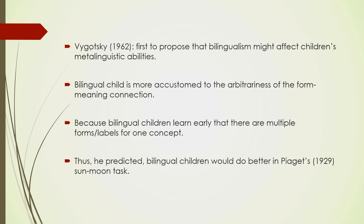This understanding goes back to Vygotsky in 1962. He was the first to propose that bilingualism might affect children's ability in the metalinguistic domain. He said that bilingual children are more accustomed to the arbitrariness of the form-meaning connection. All students of linguistics know Saussure's famous signifier-signified connection. The very fact that this connection is arbitrary is more apparent to a bilingual than to a monolingual, according to Vygotsky.